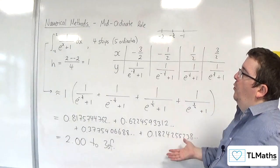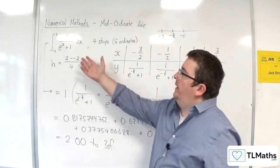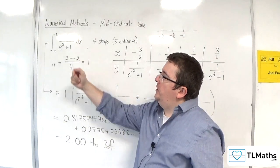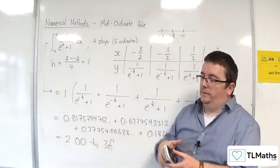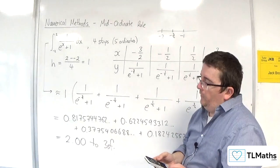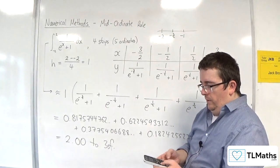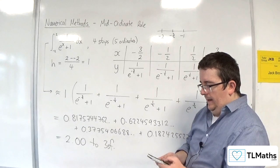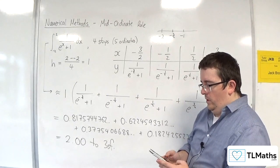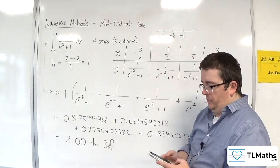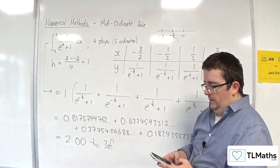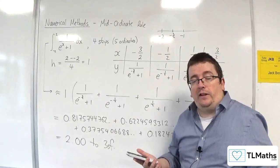So then I would want to check that this is actually giving me something close to that. So using the integral button, 1 over e to the x plus 1, evaluated between minus 2 and 2. My calculator says that's equal to 2.